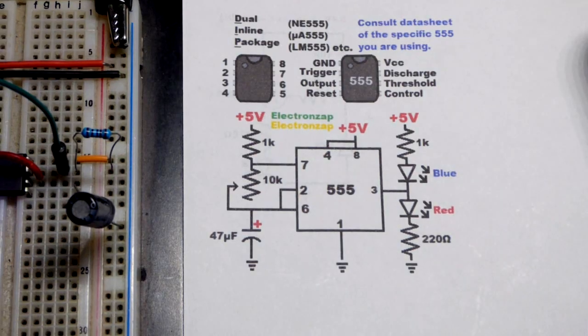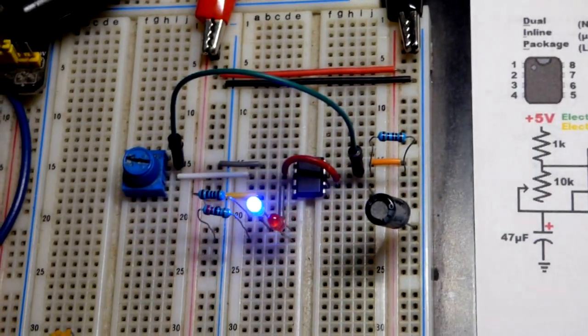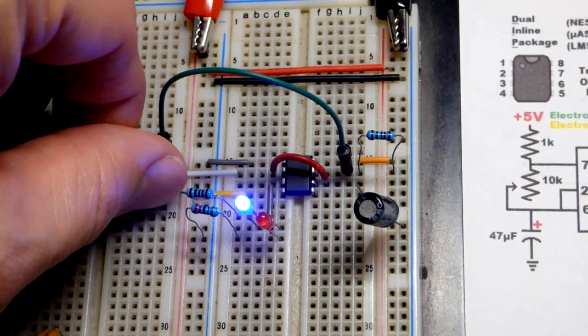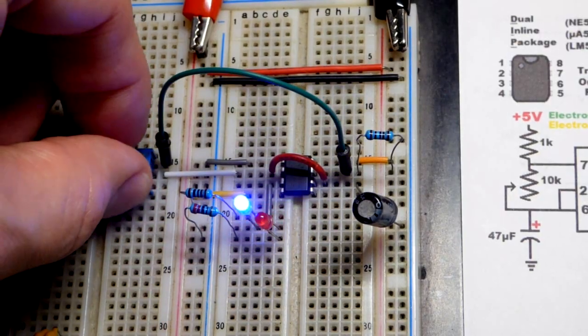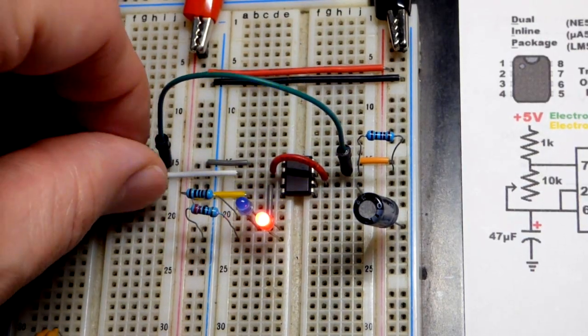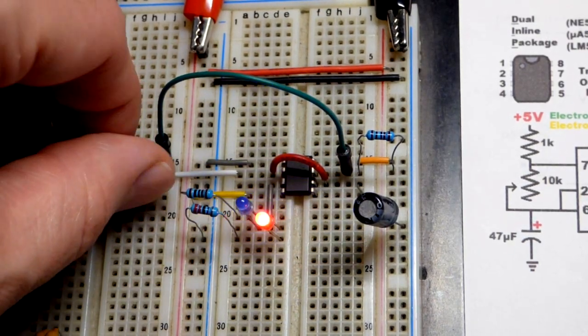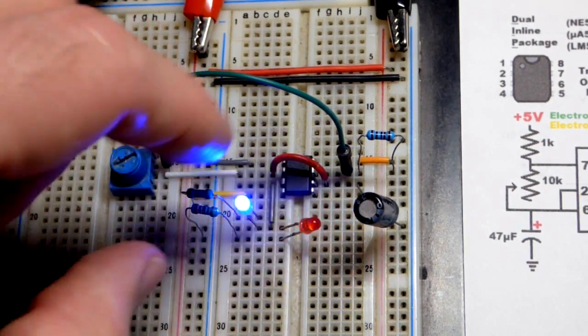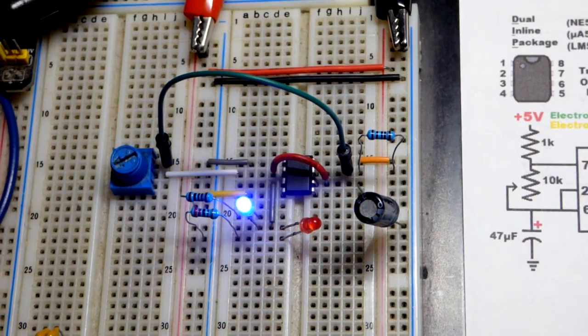I'm using an NE555. If you use an NE or a micro A555 your circuit should work pretty much like this if you wire it the same way. If you have a different type of 555 timer you know it may not be able to provide as much current, it might have some other issues. So always consult the data sheet for the particulars of the 555 you are using.